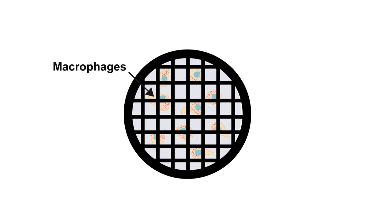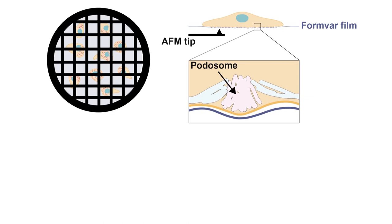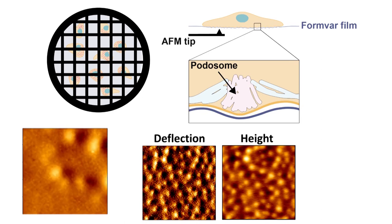The third step of this process consists in sealing cells on the grids and leaving them to adhere. The final step of the procedure is to image the formular film beneath the cells using atomic force microscopy. When adhering to a substrate, macrophages form submicrometric adhesion structures called podosomes. Ultimately, the deformation of the film induced by podosomes will be quantified and converted into forces using a homemade mechanical model.